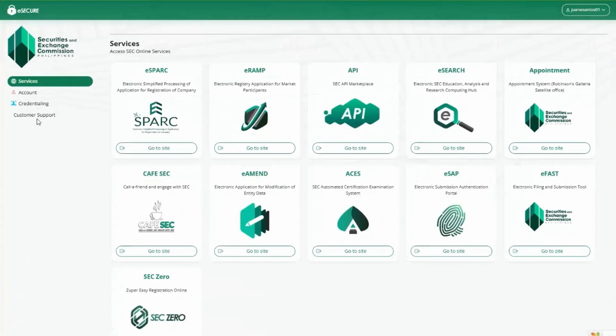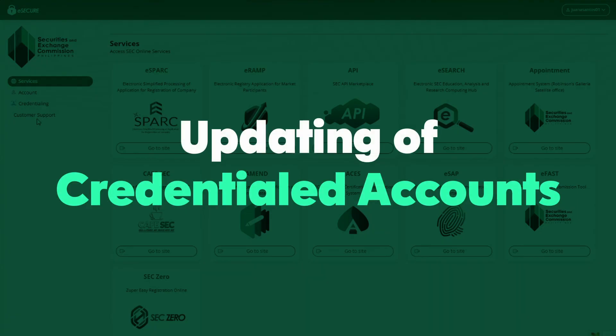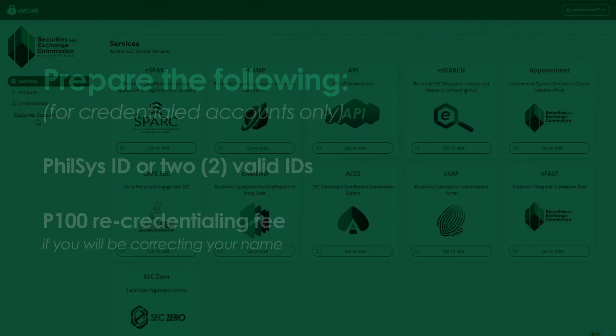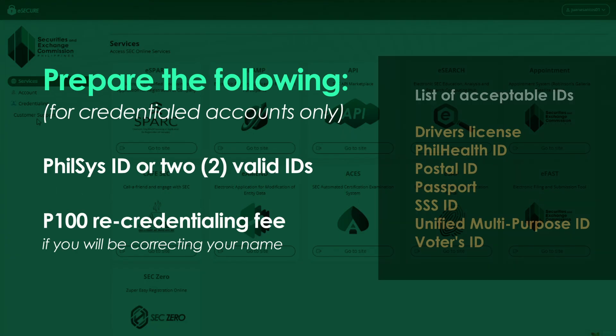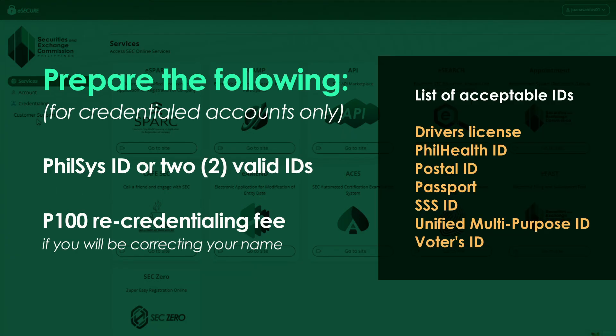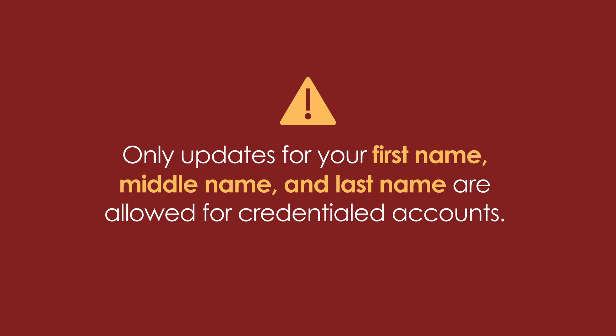The process will depend on whether your account has been credentialed or not. For updating of credentialed accounts, prepare the following: your PhilSys ID. If not available, you may use two IDs from this list. A 100 pesos re-credentialing fee is required if you will be correcting your name. Note that only updates for your first name, middle name, and last name are allowed for credentialed accounts.